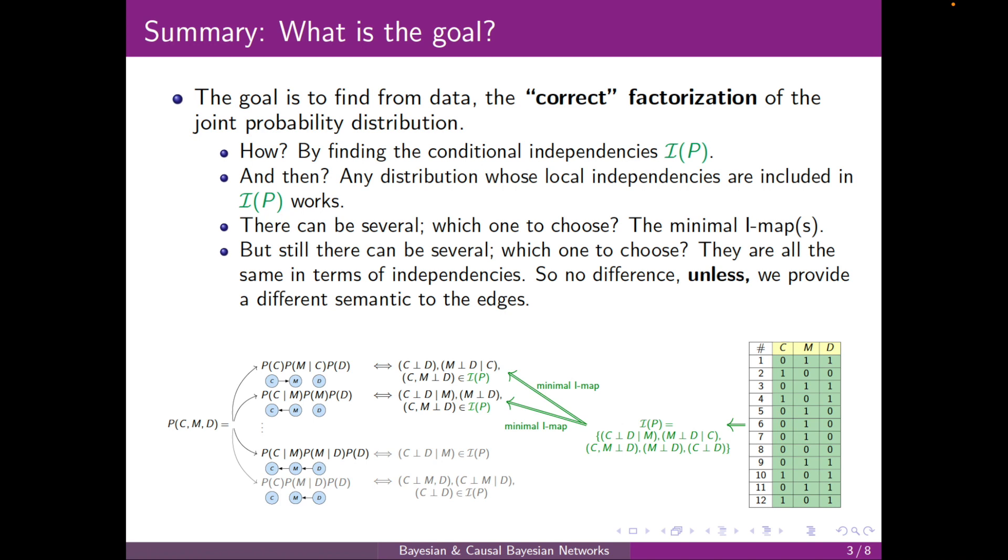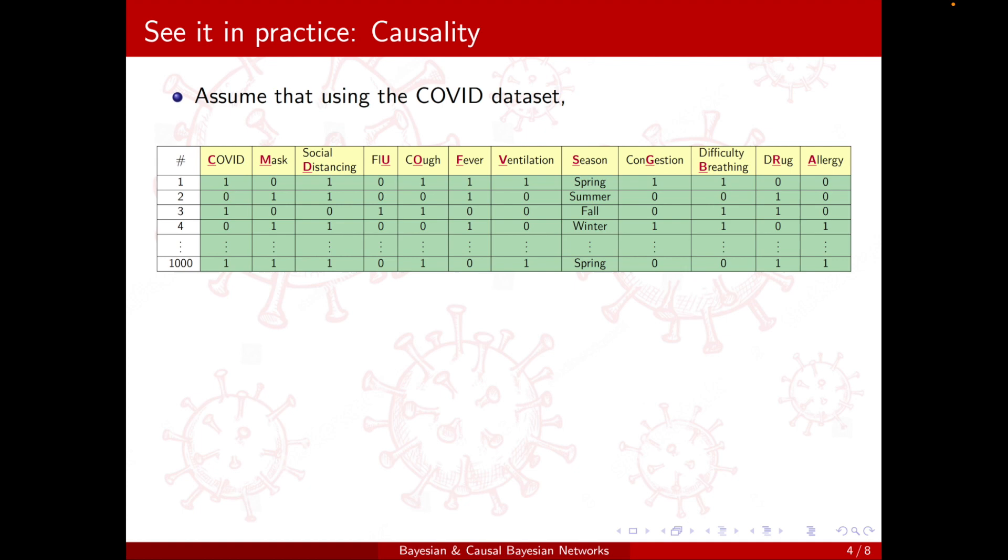So let's see what do I mean by those semantics, different semantics. We go with an example, causality. Assume that using the COVID data set, this is our main COVID data set problem that we have been working with, we obtain the following structure.